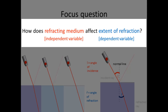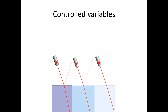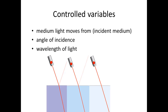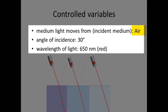Our focus question is: how does refracting medium affect the extent of refraction? For a fair test, we must control the incident medium, the angle of incidence, and the wavelength of light. I've chosen air as the incident medium, 30 degrees as the angle of incidence, and red light of wavelength 650 nanometers.